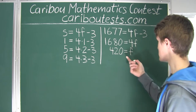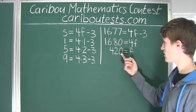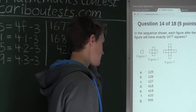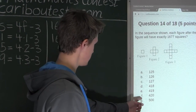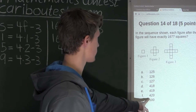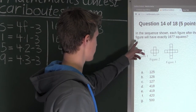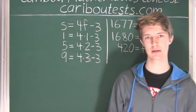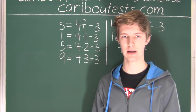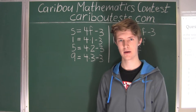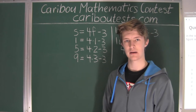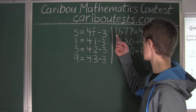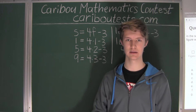So F = 420. Looking at the answer options, we can see it is option 420. Figure 420 will have exactly 1,677 squares. In a contest under time pressure, we assume this is correct, so 420 is the answer.